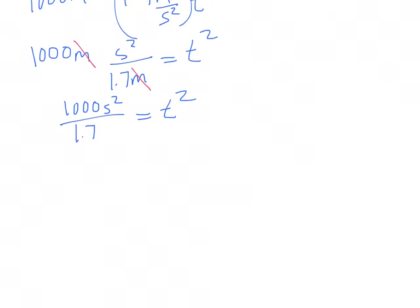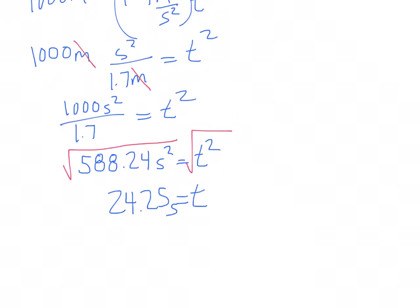Which again is good because we have second squared needed here and second squared needed there. So then I'm going to, after I do this calculation here first, that gives us 588.24 seconds squared is equal to t squared. And we're going to take the square root of both sides. That gives us a time equal to 24.25 seconds. And that is our NASCAR.